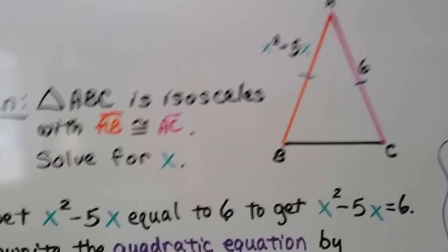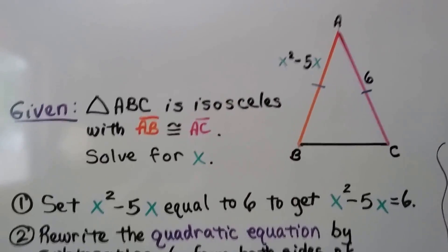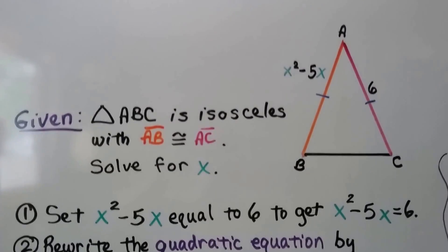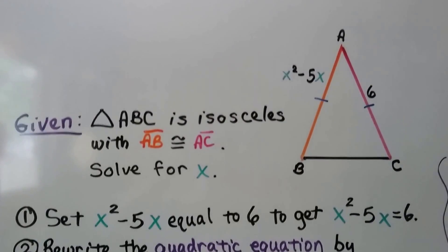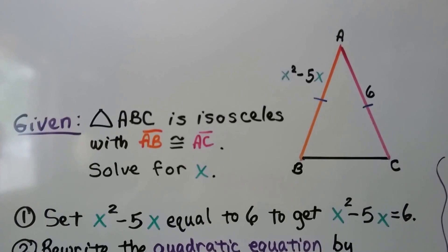Take a look at this diagram. It's given that triangle ABC is isosceles, with the orange segment AB congruent to the pink segment AC.